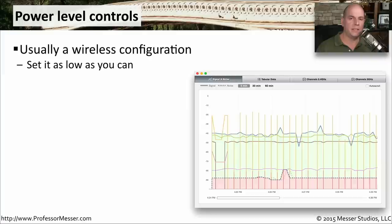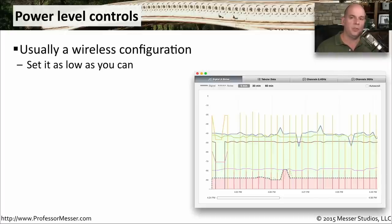On many more advanced access points, you have control over the power used on the wireless networks. This is something you generally want to set as low as you can so that everybody in your area can use the wireless network, but you want to prevent those wireless signals from going outside of your immediate area.